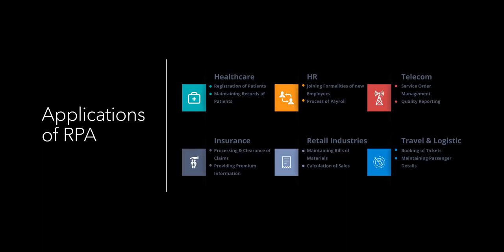In insurance, RPA can be used for processing and clearance of claims and providing premium information. For example, if someone sends an email inquiring about a plan, the RPA can automatically reply with all the information about that plan, the premiums, and the benefits. In retail, they can be used for maintaining bills of materials and calculation of sales. In travel and logistics, you can automate booking of tickets and maintaining passenger details.